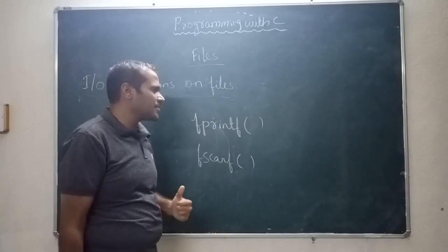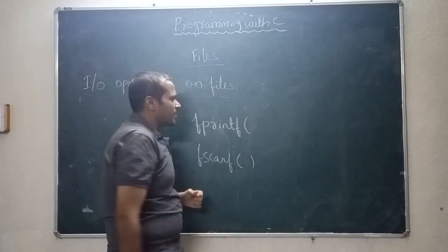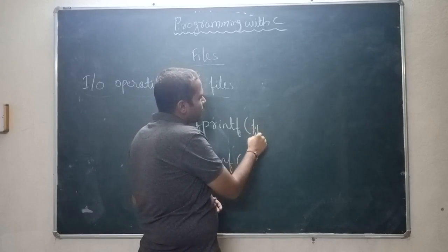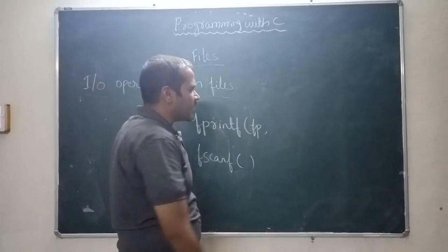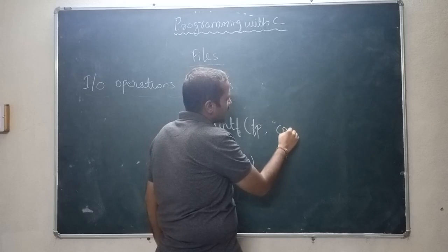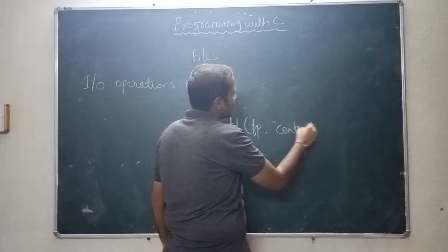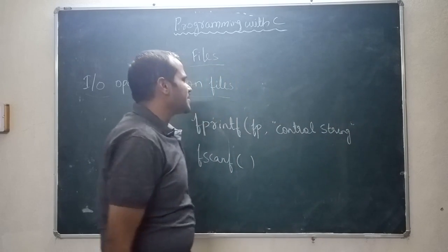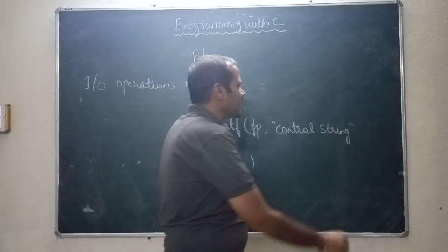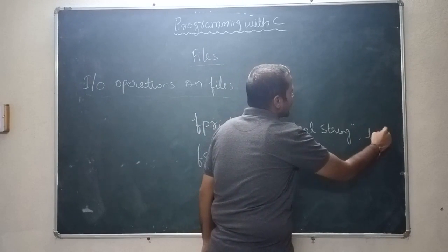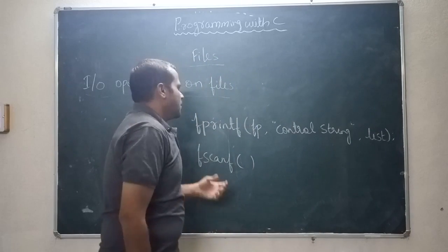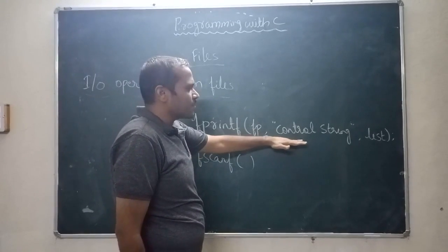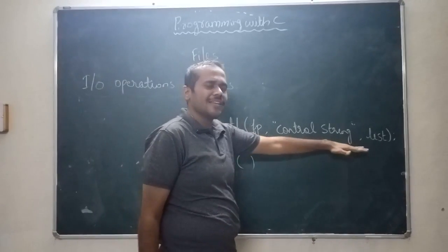What is the syntax for fprintf? fprintf takes three parameters. The first one is the file pointer. The second one is the control string. And the third one is the list of variables.